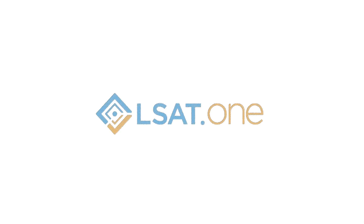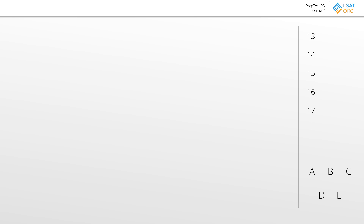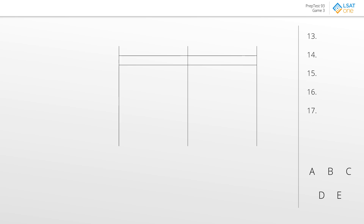For this game, we have what is just a textbook in and out game. There's going to be a bunch of paintings and specifically five of them are going to be selected. We'll just set up accordingly. It's quite literally just in and out. We know that we have five spaces on the inside, which since there are eight in total, means we are going to have three spaces on the outside.